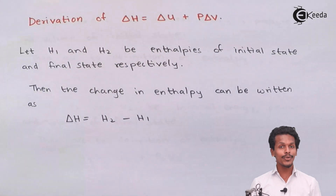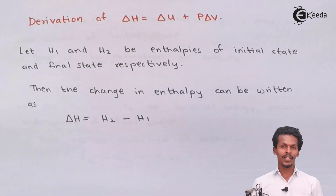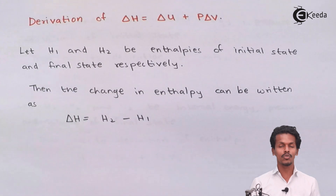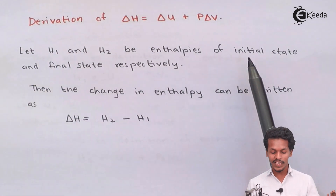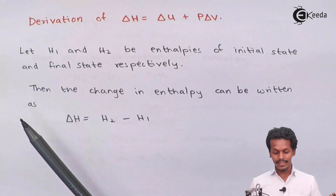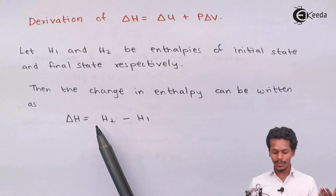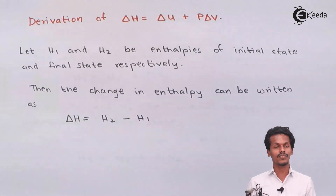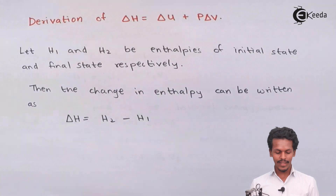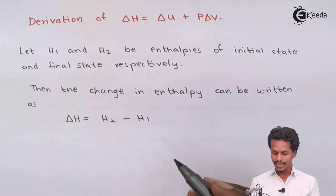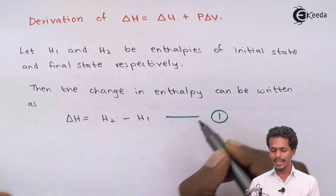Here we are going to talk about the change in enthalpy and derive the equation delta H equals delta U plus P delta V. Since we are talking about change in enthalpy, the initial and final states of enthalpy should be stated clearly. Let H1 and H2 be the enthalpies of the initial state and the final state respectively. Then the change in enthalpy can be written as delta H equals H2 minus H1. Let this be equation one.